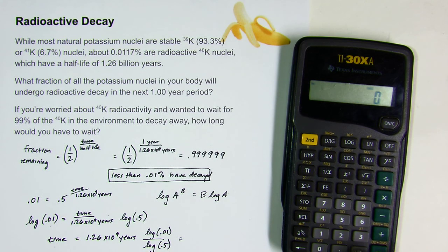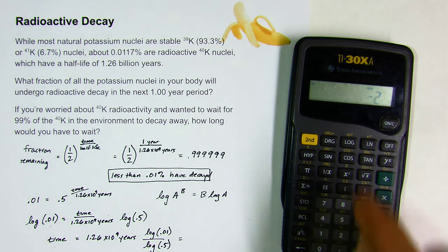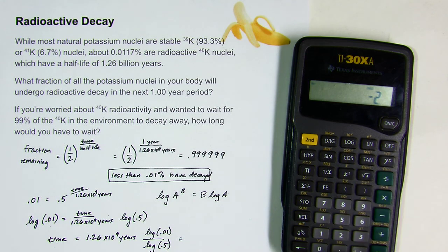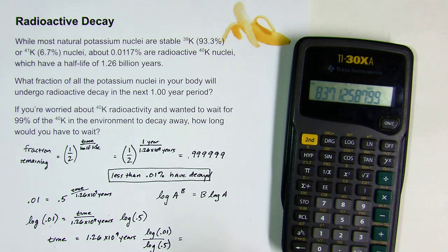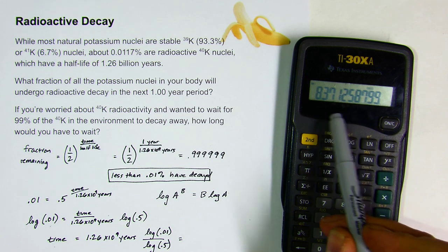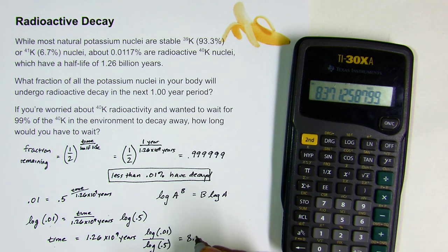And that's also something we can calculate. Log of 0.01 is negative 2. Log of 0.5 is negative 0.3. So if you divide one by the other, you get 6. You multiply that by 1.26 billion years, and you get a really big number: 8.3 times 10 to the ninth years, or 8.3 billion years.